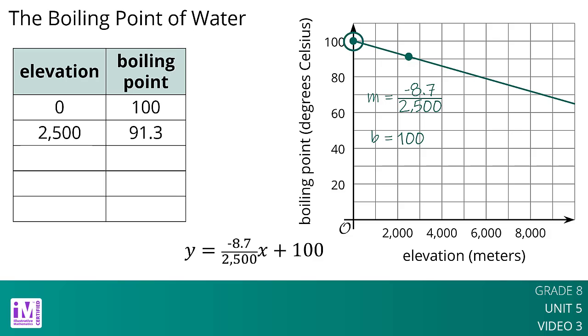This equation is an example of a mathematical model. A mathematical model is a mathematical object like an equation, a function, or a geometric figure that we use to represent a real-life situation. Sometimes a situation can be modeled by a linear function. We have to use judgment about whether this is reasonable based on the information we are given. We must also be aware that the model may make imprecise predictions or may only be appropriate for certain intervals of values.